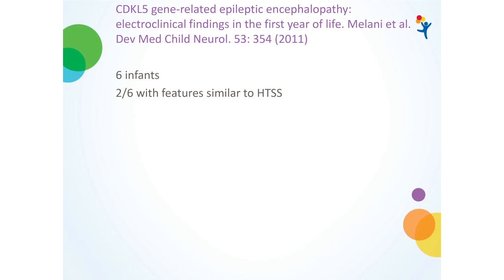There was also an Italian group paper on CDKL5 gene-related epileptic encephalopathy — electroclinical findings in the first year of life. They described six infants, and two out of the six, though they didn't use the same terminology, had features that gave the same flavor as the hypermotor tonic spasm sequence described in the earlier paper.